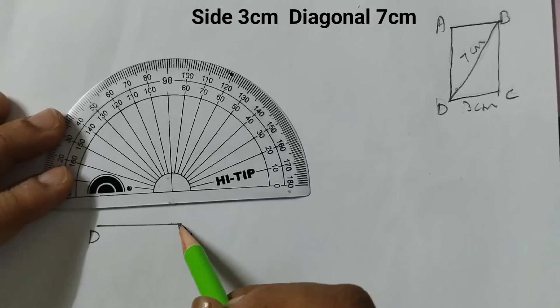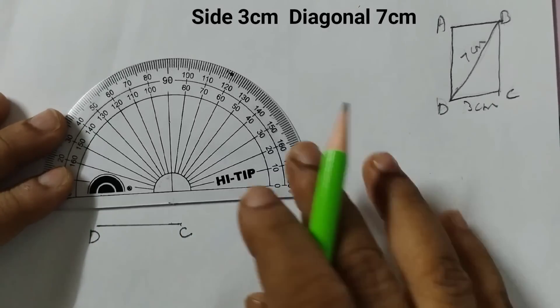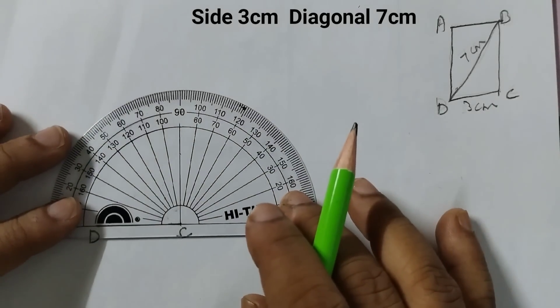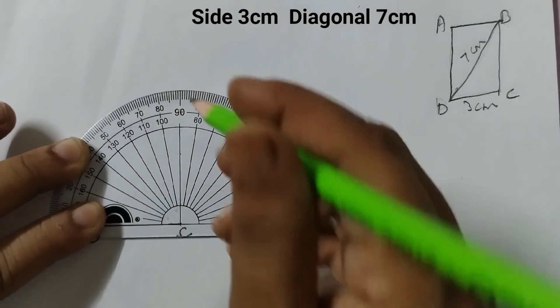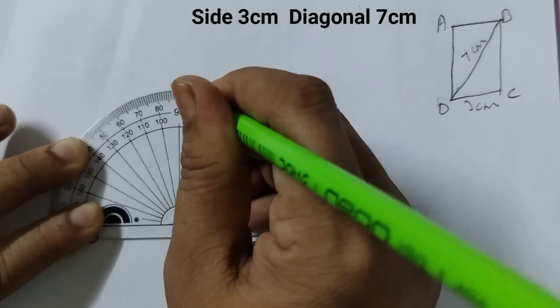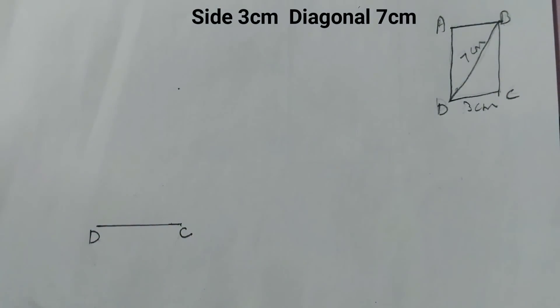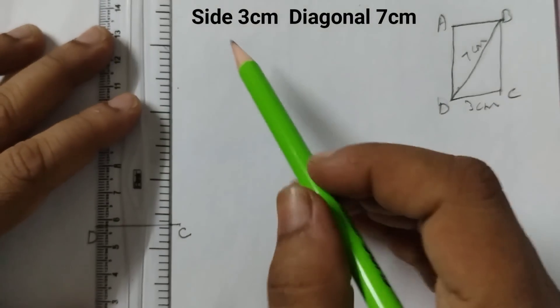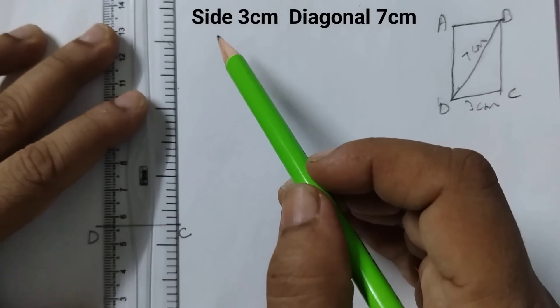Take a protractor and at this point at C draw a perpendicular. So place the protractor like this. Mark a point at 90 and we will draw a line. Don't draw a very dark line because we need to erase the extra part of it.